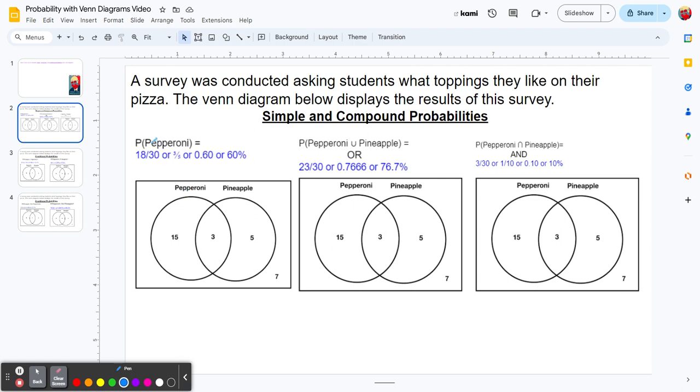For the probability of pepperoni, we look at the pepperoni circle. We have 15 and 3, that's 18. The total amount of people in this Venn diagram is 30 - that's 15 plus 3 plus 5 plus 7. So 18 out of 30 is our probability.